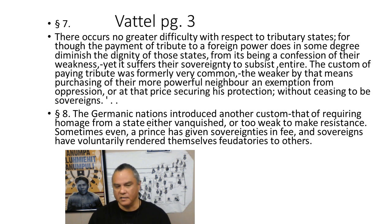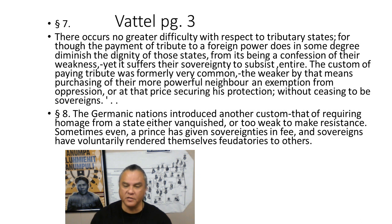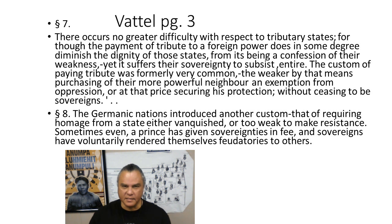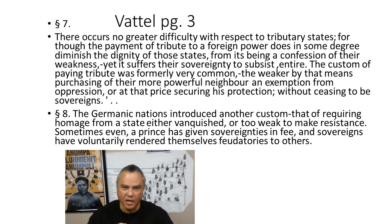He goes on to say in section 8: 'The Germanic nations introduced another custom, that of requiring homage from a state either vanquished or too weak to make resistance. Sometimes even a prince has given sovereignties in fee, and sovereigns have voluntarily rendered themselves feudatories to others.' So what Vattel is saying is that the weaker unit — the tribes — essentially signed a treaty and therefore became a weaker state underneath a more sovereign state.